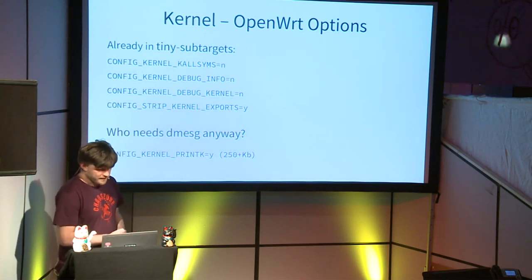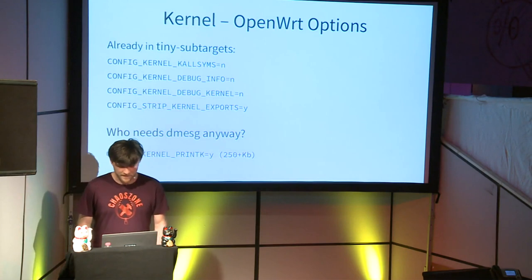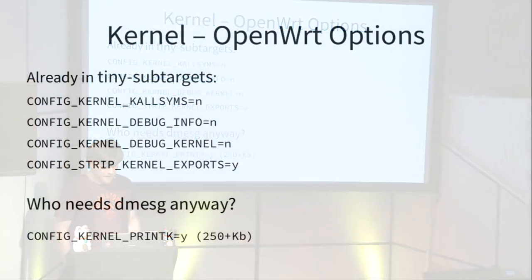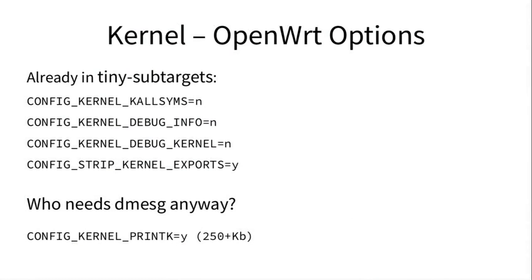The first option is CONFIG_KALLSYMS — this drops the symbols from the kernel, meaning if you have a crash you only get numbers and no function names. If that's already dropped, you can also drop debugging info. And because we don't have the opkg package manager, we can also strip the kernel exports, which means we can't load any external modules anymore, but we save some space.